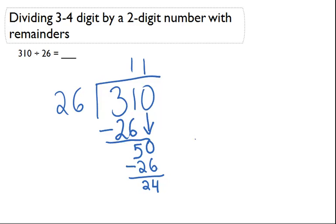So 26 cannot go into 24. So that must mean it's the remainder since I have no other numbers I can bring down. So that's going to be with the remainder of 24. So the answer is 11 remainder 24.